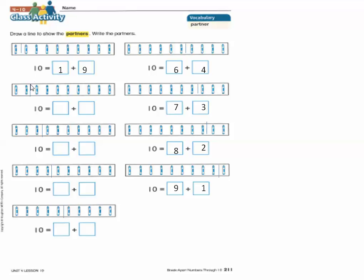The next one — we will draw a line after two cranes. Count the cranes that come before the line: one, two. Write two here. Then count the cranes that come after the line: one, two, three, four, five, six, seven, eight. Write eight here.